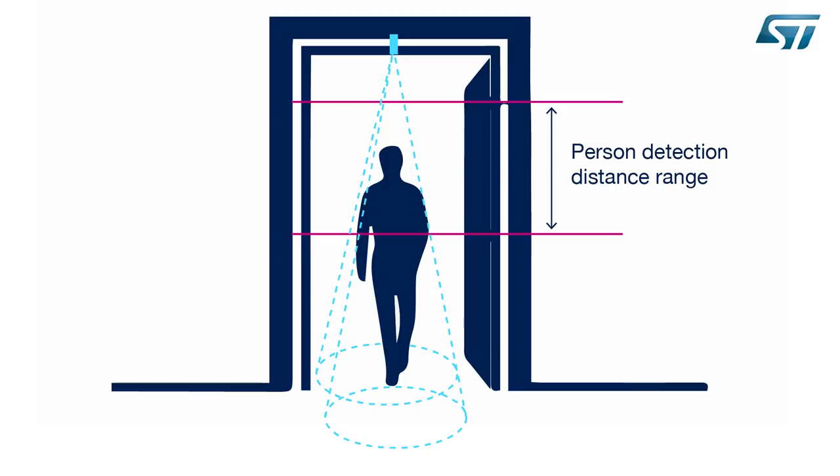As the person walks into the room he is seen in the outer zone. He is then detected in the inner zone. As he fully enters the room we increment the count by one.